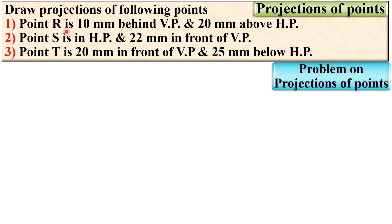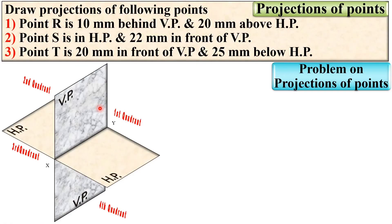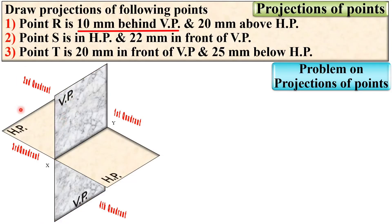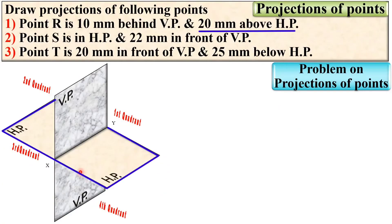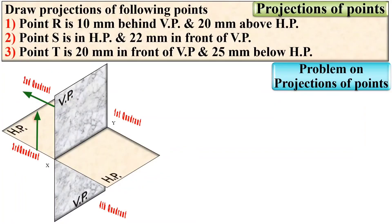Let's start with the first point R. For each and every problem of the projection of points, you need to decide whether point R is in first quadrant, second quadrant, third quadrant, or fourth quadrant. Here it is given that point R is 10 mm behind VP. Behind VP means it can be in second quadrant or third quadrant. Next, it is 20 mm above HP. Above HP means it is in second quadrant. So, behind VP and above HP together means it is in second quadrant.